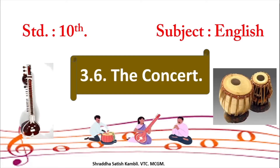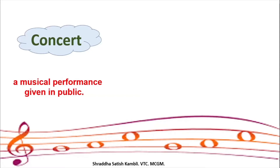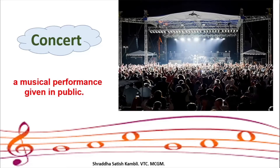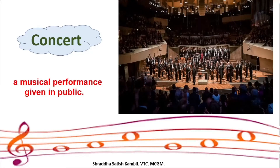When you look at this image you will see musical instruments and some people sitting and performing. The word 'concert' means a musical performance which is given in public. In public means there could be a large hall or a big stage where people are performing and there would be a huge crowd present to witness this performance. There is a huge lit-up stage and an open space with lots of people cheering for the musicians. This is also a concert happening in a hall.